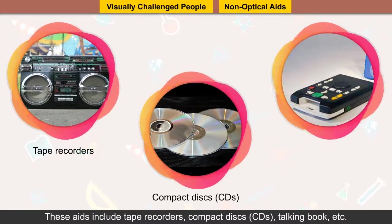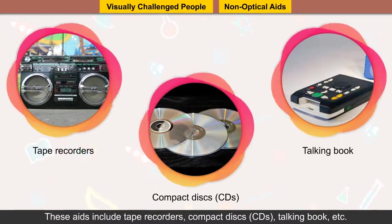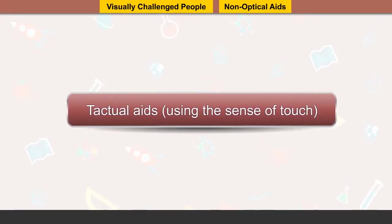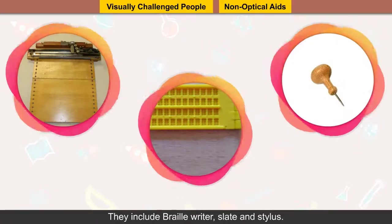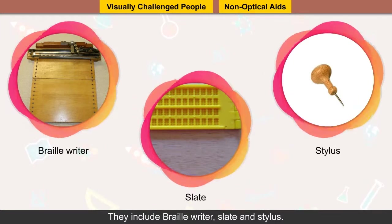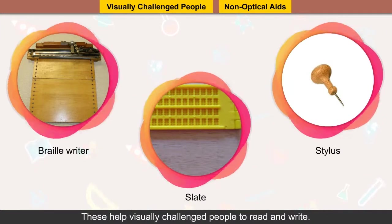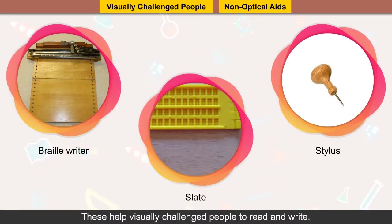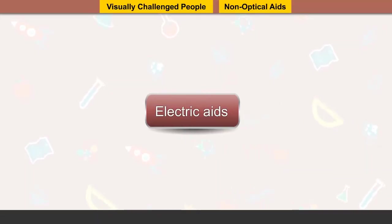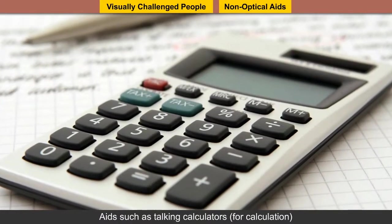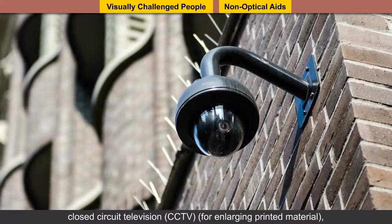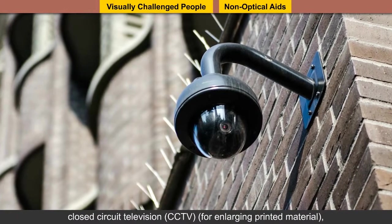Tactile aids use the sense of touch and include braille writers, slate and stylus, which help visually challenged people to read and write. Electric aids such as talking calculators for calculation, closed circuit television (CCTV) for enlarging printed material are also available.